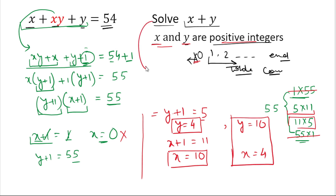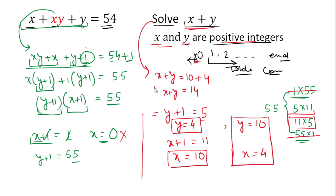Now we need to find the value of x plus y. Taking the first set, x is 10 and y is 4, so x plus y equals 10 plus 4, which is 14. For the second set, x plus y is also 14. So the value of x plus y is 14.